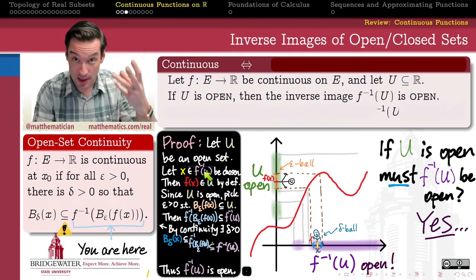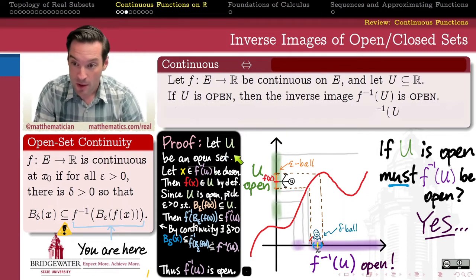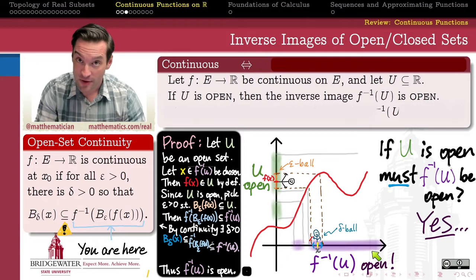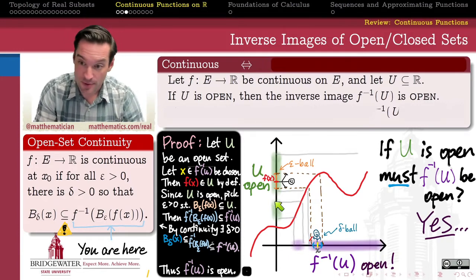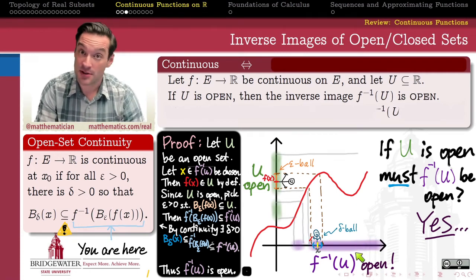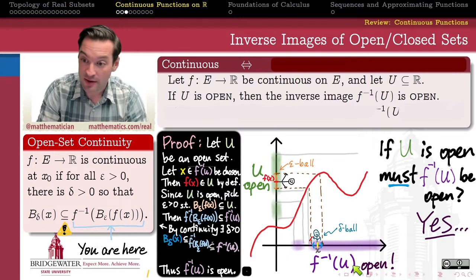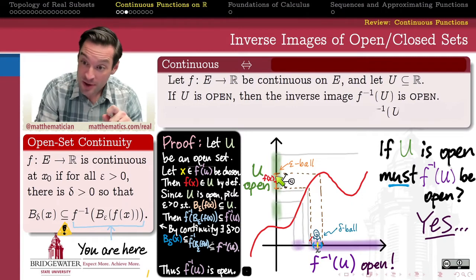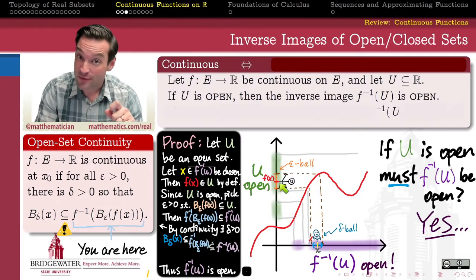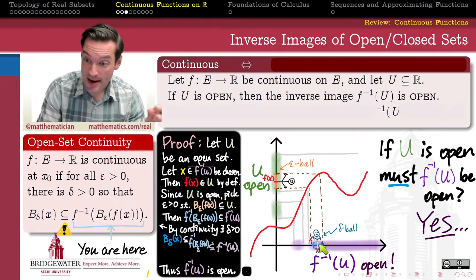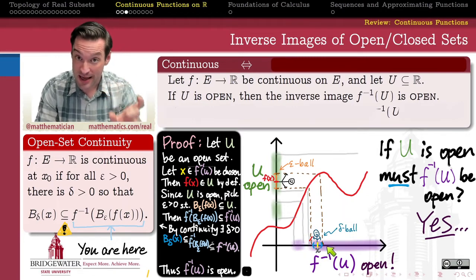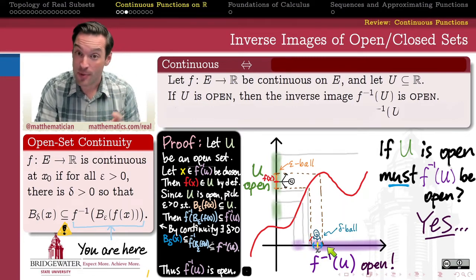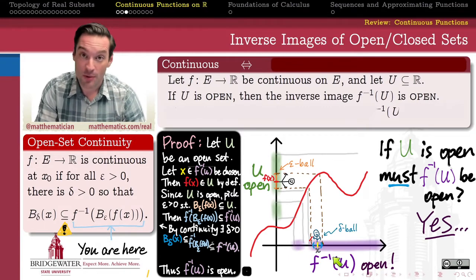Let's review this proof quickly. We picked an open subset of the codomain of a continuous function and showed that its inverse image remains an open set of the domain. How? We picked an arbitrary point of that inverse image and needed to show a delta ball around it is entirely contained within that set. We brought that point up to the codomain, invoked the openness of U to get an epsilon ball around f of x, then invoked the continuity of the function to inverse-image that epsilon ball down to a subset of the original set containing a delta ball. That delta ball is what we used to show the set was open.